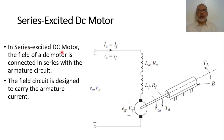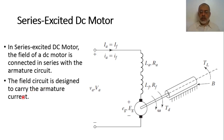In a series excited DC motor, the field is connected in series with the armature circuit. The field circuit is designed to carry the same armature current, because the armature current generally has a large value. In a separately excited DC motor we can use a small field current, but in the series excited motor the field coil must be designed to handle the large armature current.